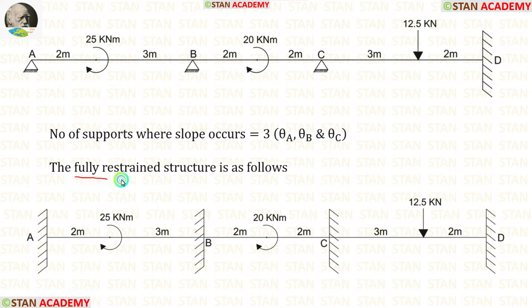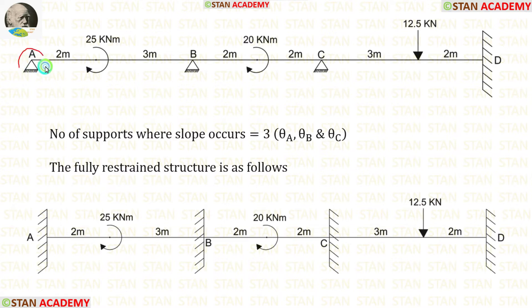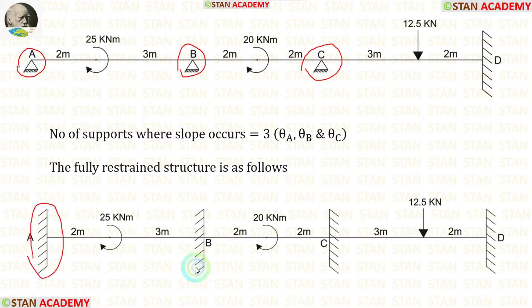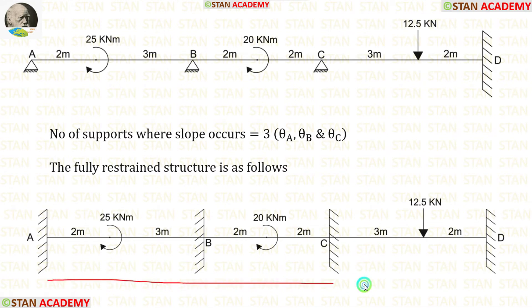Now let us make the fully restrained structure. In the fully restrained structure, there will be no slope. Since only fixed supports have no slope, we remove the hinged supports from points A, B, and C and replace them with fixed supports. Now all supports are fixed, so there will be no slope anywhere — that is why it is called the fully restrained structure.